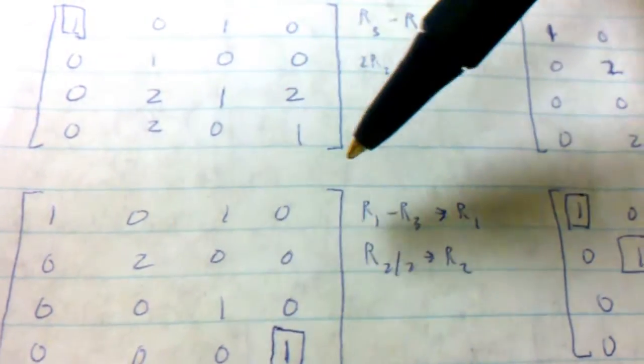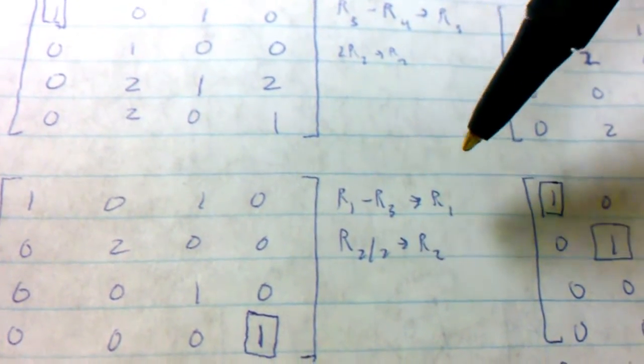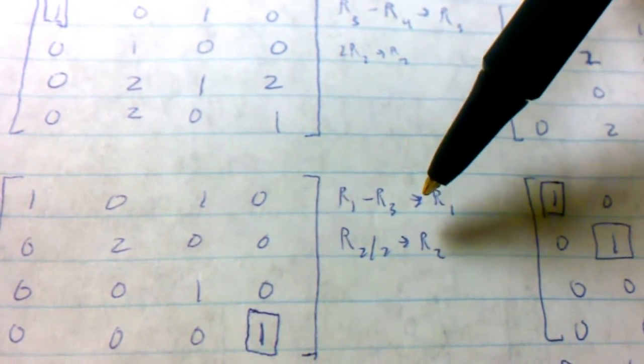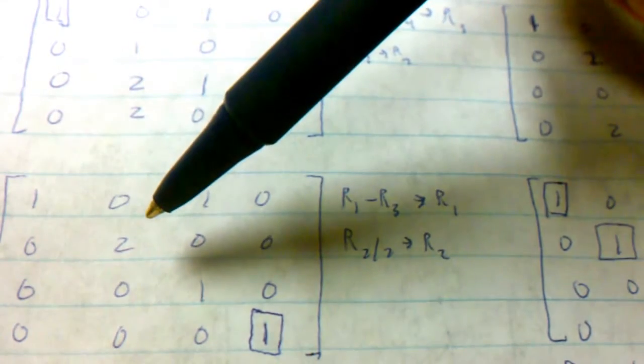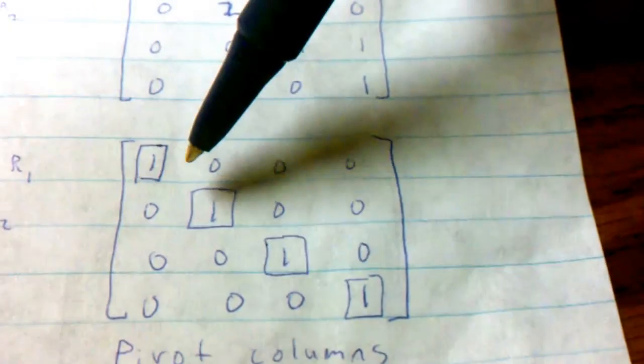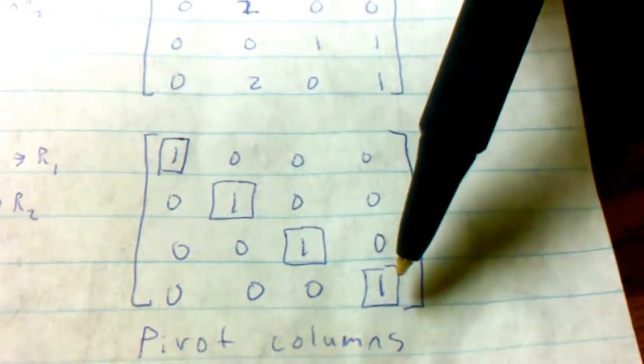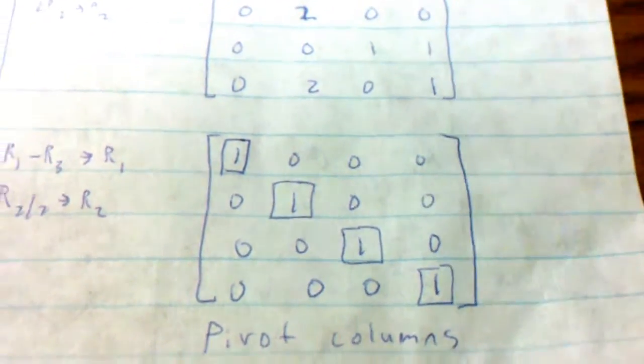And then we're going to do row-1 minus row-3 to give us a new row-1. And we are going to divide row-2 by 2. And after we do that, we have now four beautiful pivot columns right there.